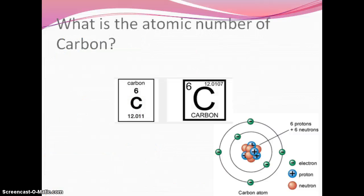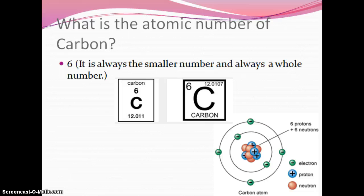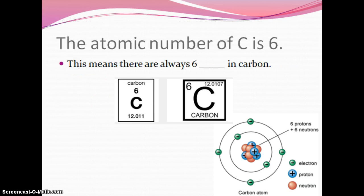What is the atomic number of carbon? The atomic number is the number of protons, which is six. When you look at the periodic table, it's always the smaller number and always a whole number. This means there are always six protons in carbon.